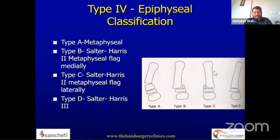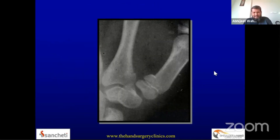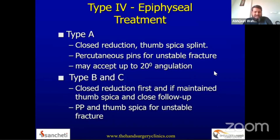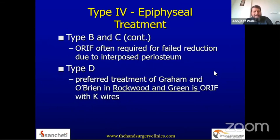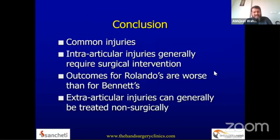The fourth type discussed is epiphyseal fractures, typically seen in skeletally immature children. They may be classified as Types A, B, C, and D by the Salter-Harris classification. The most common fracture type is Type B, where a beak in the metaphysis is visible; this is usually treated with closed reduction and casting. For Types B and C, closed reduction is used, sometimes supplemented with a K-wire. For Type D, the preferred treatment is K-wire fixation or open reduction and internal fixation.